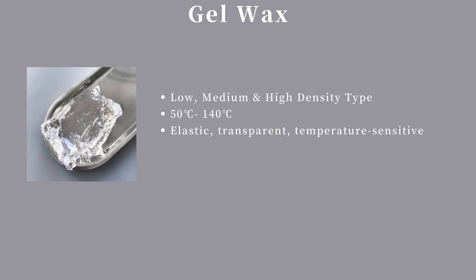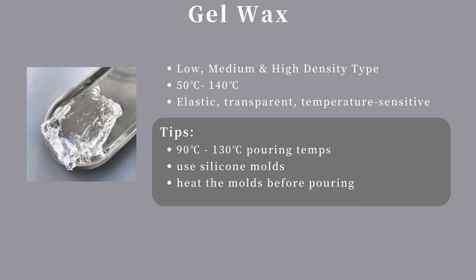The fourth type is gel wax, also known as jelly wax, categorized into high, medium, and low-density types. The higher the density, the higher the melting point and hardness. Low and high-density gel wax are commonly used for container and pillar candles. Gel wax is temperature sensitive — sudden temperature changes can lead to poor fluidity and air bubbles, so heat the mold or cup with a heat gun before pouring. Use silicone molds for gel wax, as demolding from acrylic molds is difficult. The pouring temperature ranges between 100°C and 130°C. Fragrance oil evaporates significantly at this temperature, so you may also make unscented gel candles and later drop fragrance oil into the wax pool.